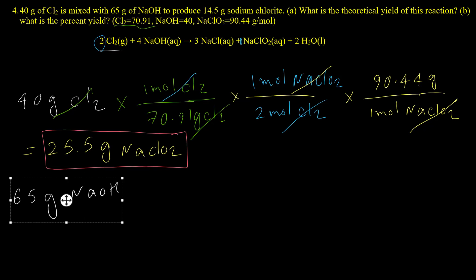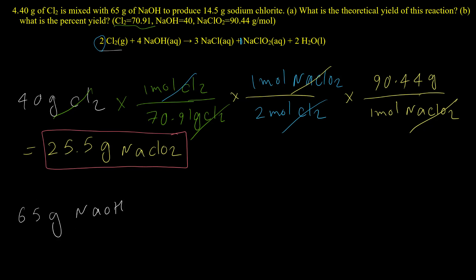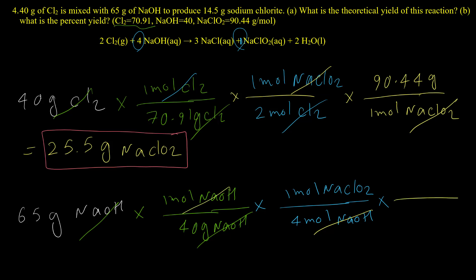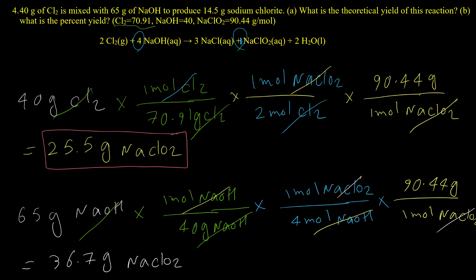Now performing the calculation using sodium hydroxide: 1 mole of NaOH is 40 grams. Based on the equation, 4 moles of NaOH equal 1 mole of sodium chloride. Converting moles of sodium chloride to grams using the molar mass of 90.44 grams per mole gives a final answer of 36.7 grams of sodium chloride.